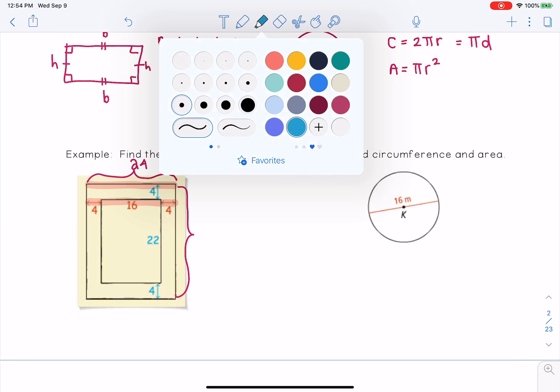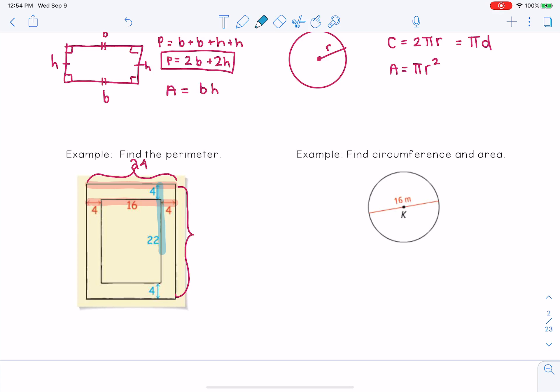And down the side, we go from 4 to 22 to 4. What's 4 plus 22 plus 4? That's 30. So then our perimeter, since this is a rectangle, is 2 times 24 plus 2 times 30, which if you do the math out for that, that's 108 units. And we're going to try to be careful to include units on a lot of these, just so we're really specific.